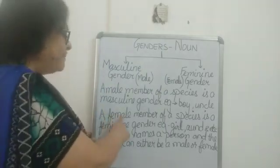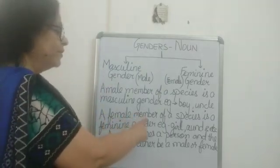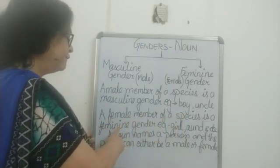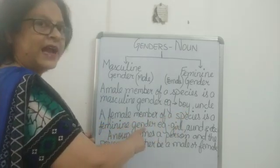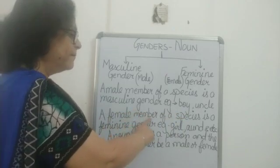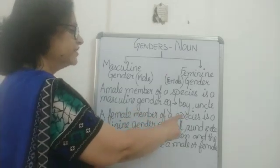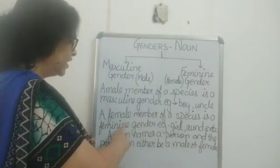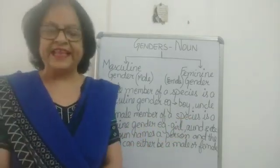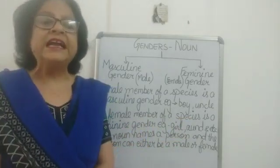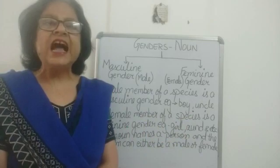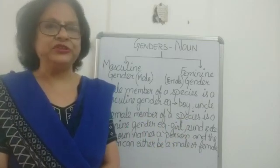A female member of a species is a feminine gender. For example: girls, mother, niece, aunt, and so on.